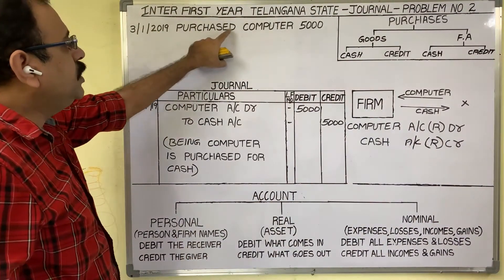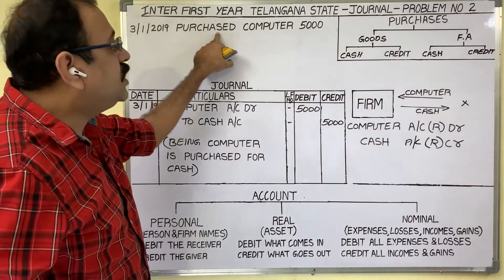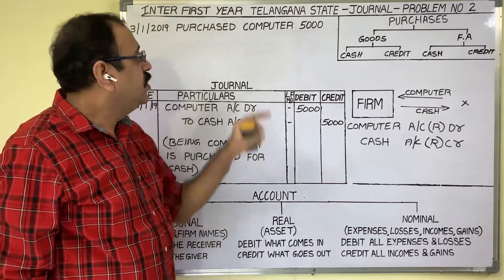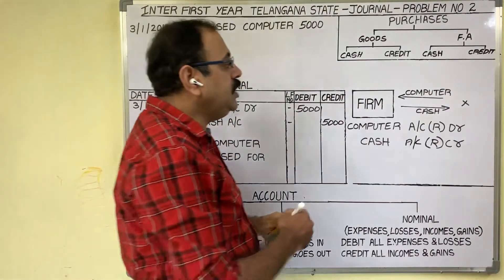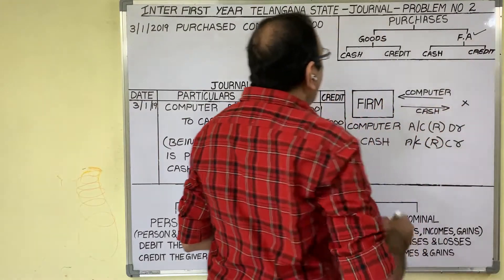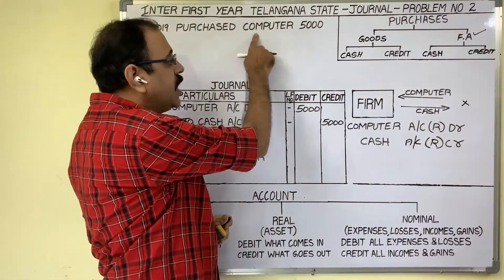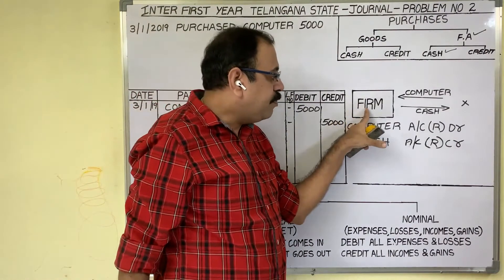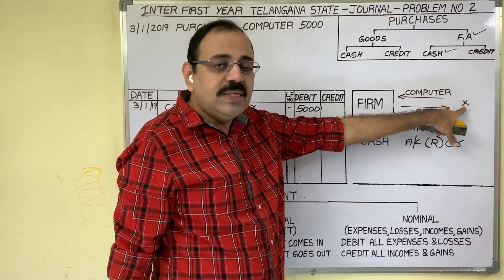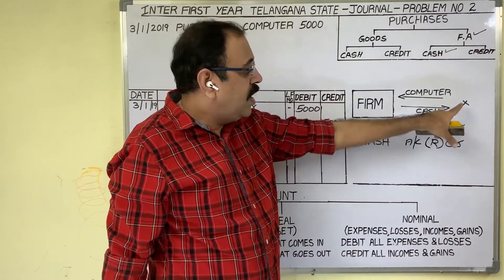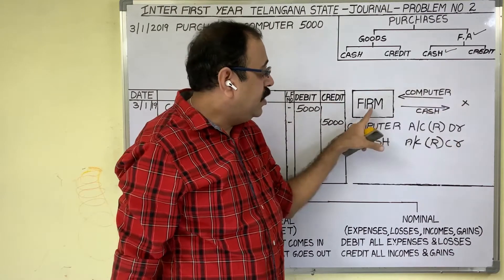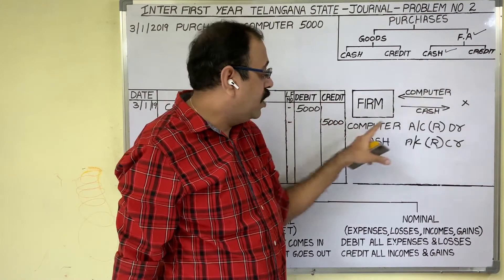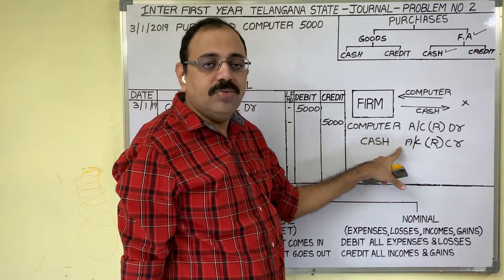The third day transaction is: purchased computer 5,000 rupees. This is a purchase-related transaction. Two points we should observe: what they purchased, and how they purchased. They purchased a computer — a fixed asset. As the seller's name is not given, this is a cash purchase. So the fixed asset is purchased for cash. The firm purchased the computer from one seller, paid cash. Computer is coming, cash is going. Two accounts are computer account and cash account. Both are assets, both come under real accounts.